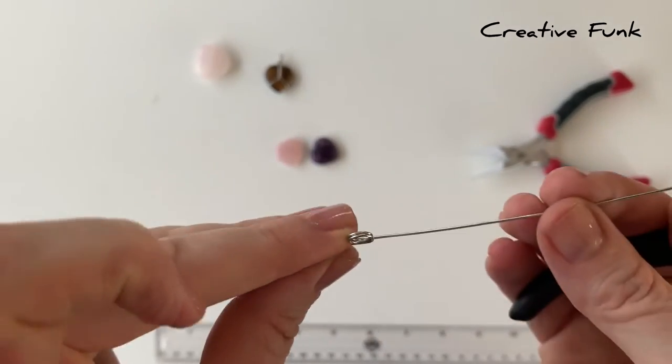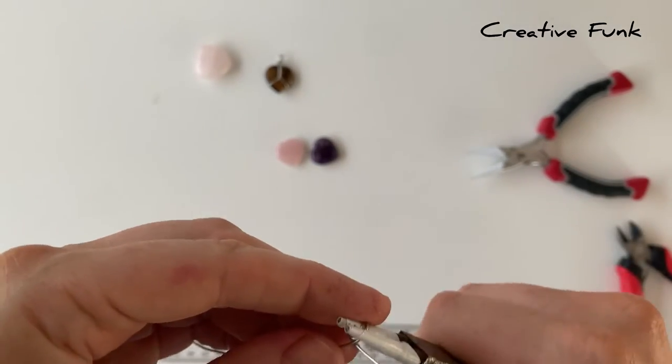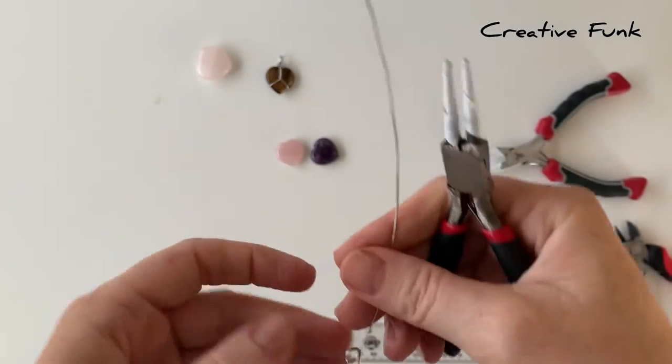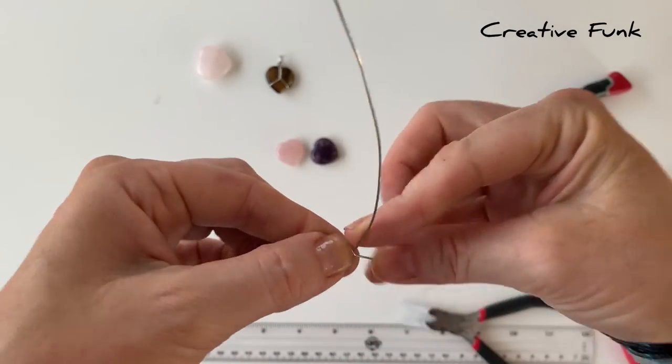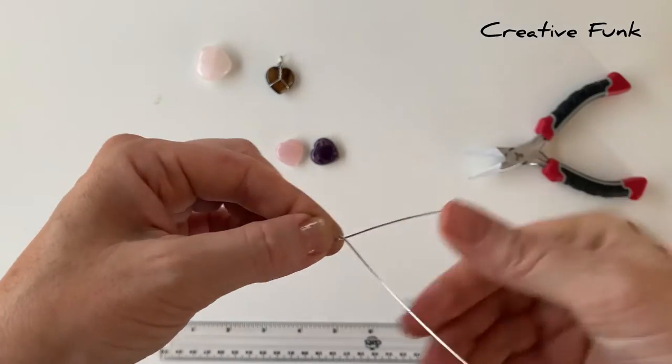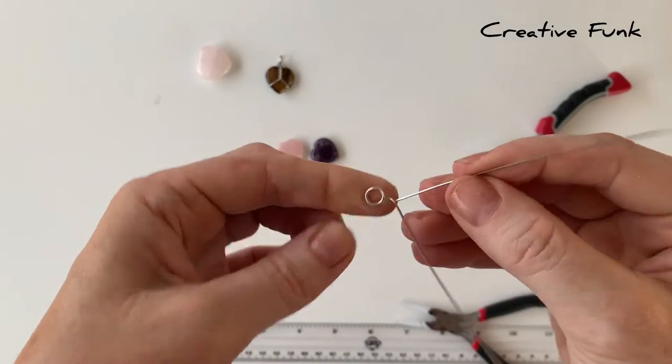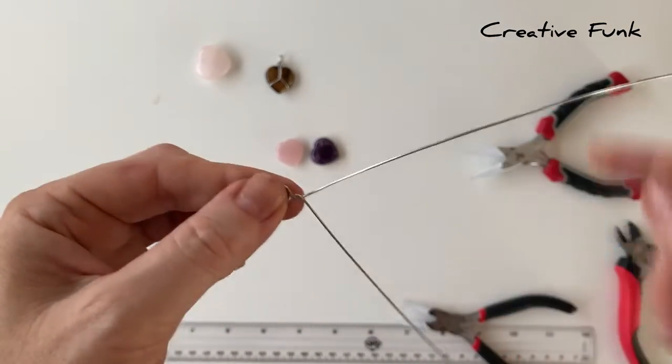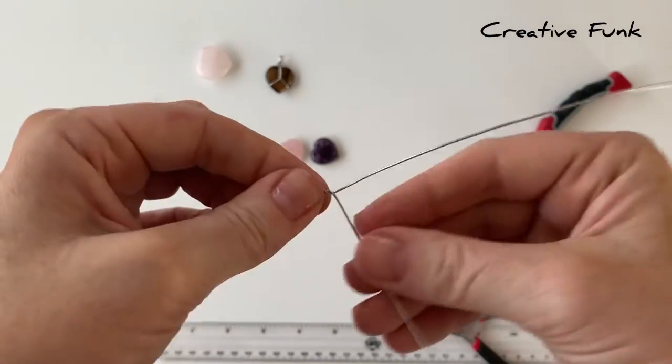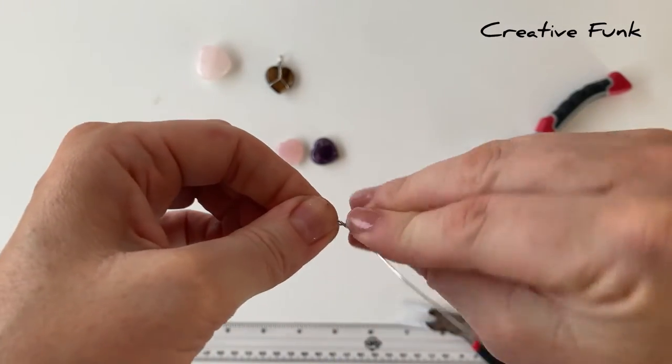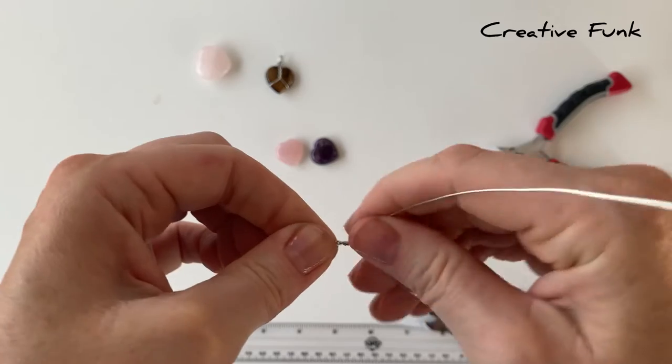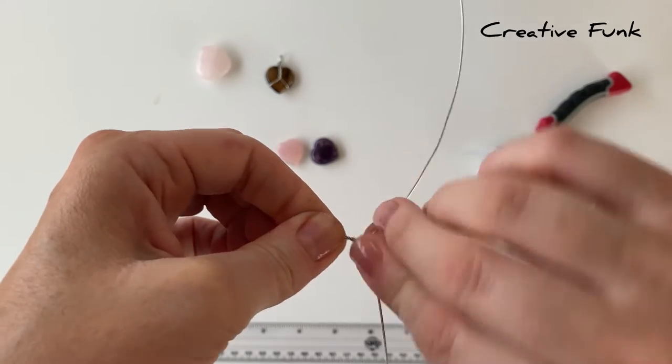Then we start to twist our wires, just making sure that you're twisting equally each wire around each other. You're not just twisting one wire around the other wire, just keep twisting. I've done about five or six half twists here.